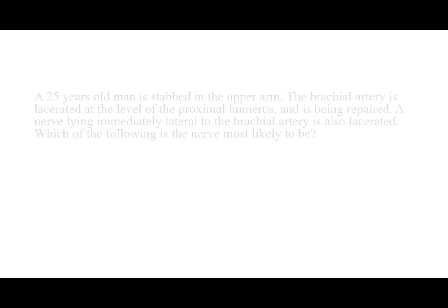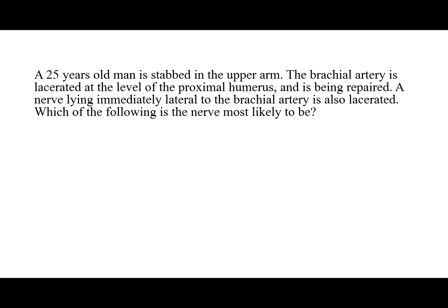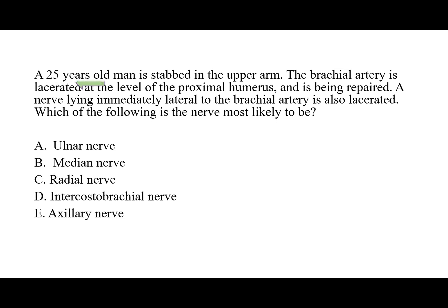Second scenario: A 25-year-old man is stabbed in the upper arm. The brachial artery is lacerated at the level of proximal humerus and is being repaired. A nerve lying immediately lateral to the brachial artery is also lacerated. Which nerve is most likely to be affected? In the upper arm, the median nerve lies lateral to the brachial artery — but in the cubital fossa, it lies medial to it. So the answer is the median nerve.